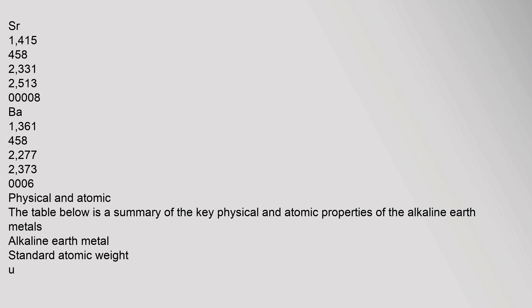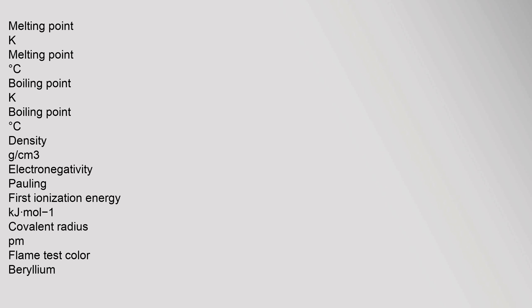The table below is a summary of the key physical and atomic properties of the alkaline earth metals, including standard atomic weight, melting point, boiling point, density, electronegativity (Pauling scale), first ionization energy (kJ/mol), covalent radius (pm), and flame test color.